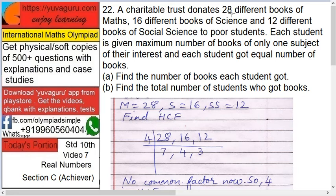A charitable trust donates 28 different books of maths, 16 different books of science, and 12 different books of social science to poor students. Each student is given the maximum number of books of only one subject of his interest, and each student got an equal number of books. Find the number of books each student got, and find the total number of students who got the books.